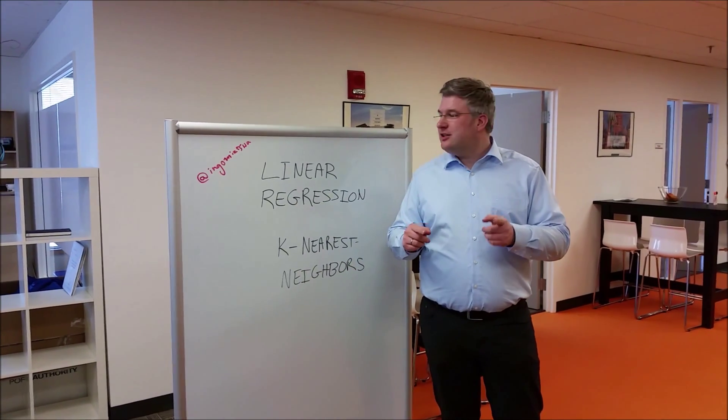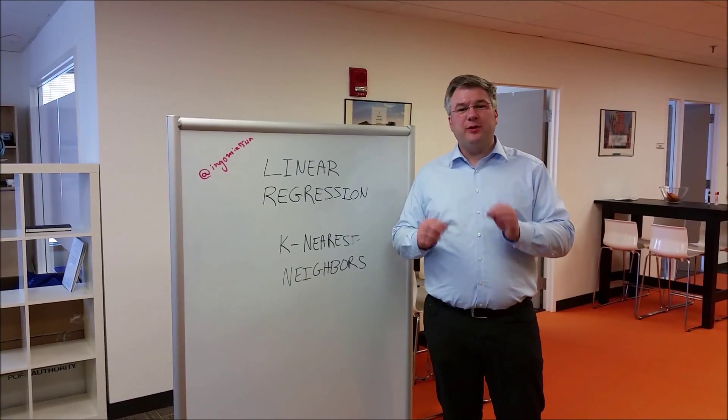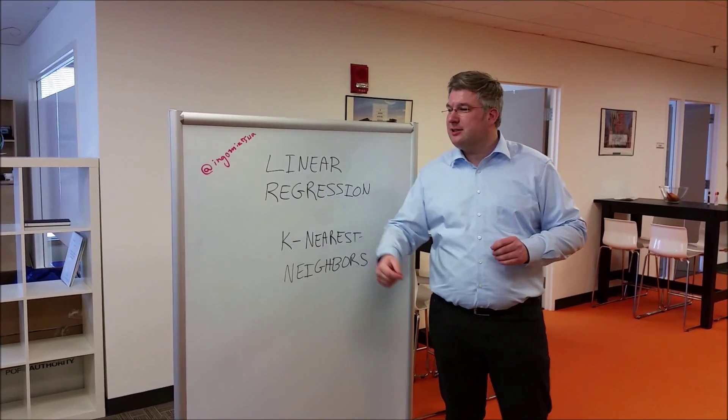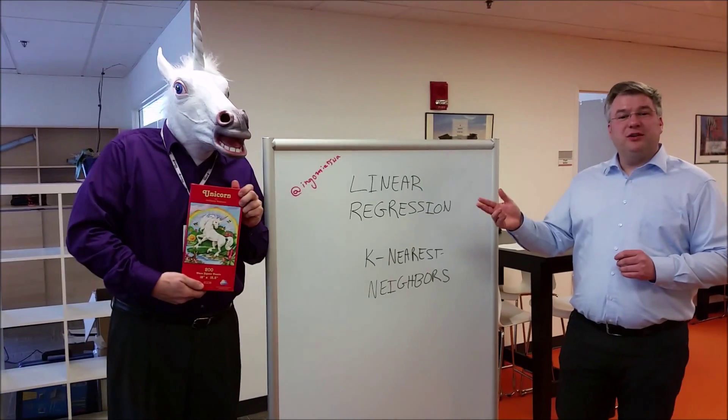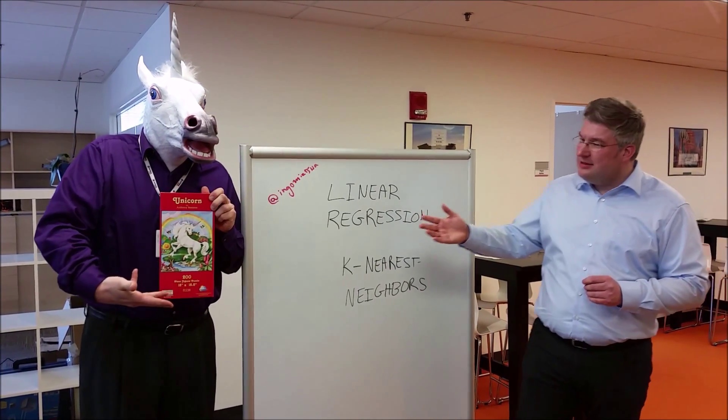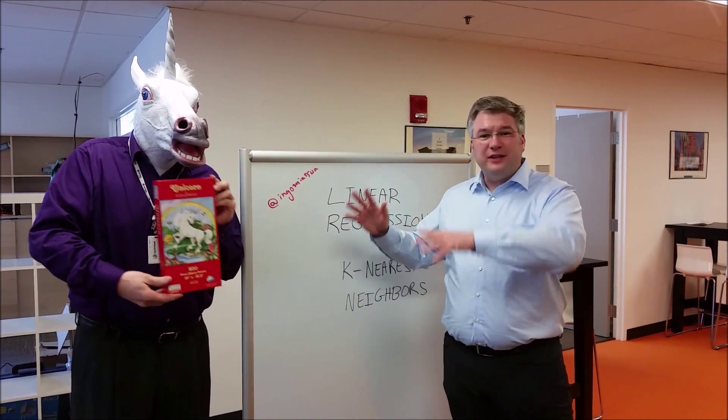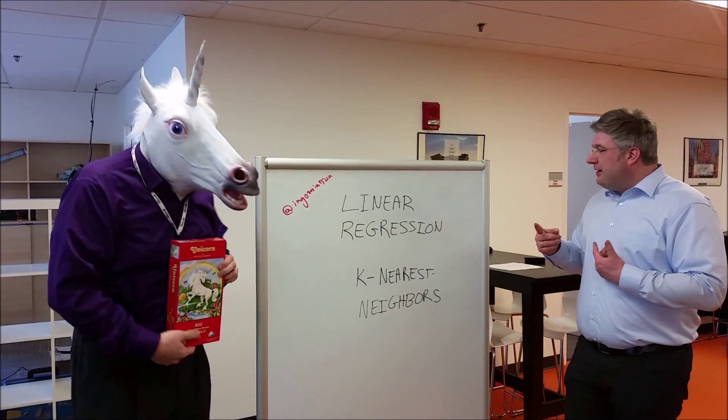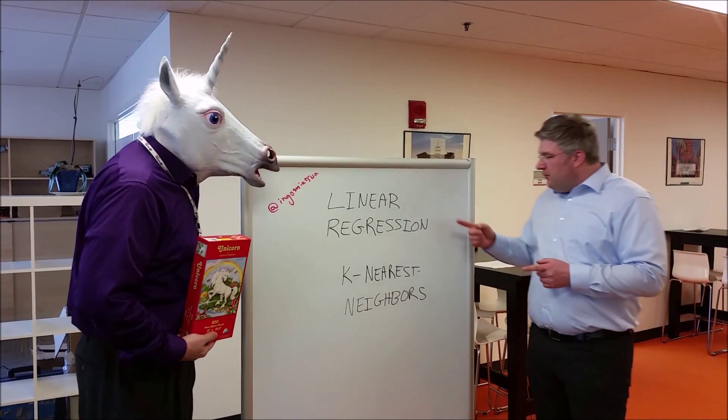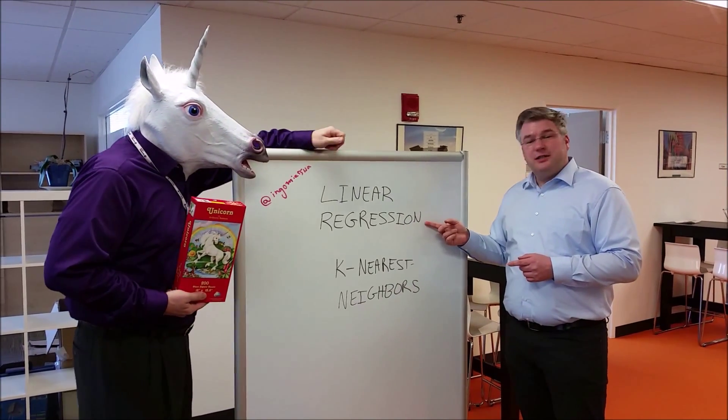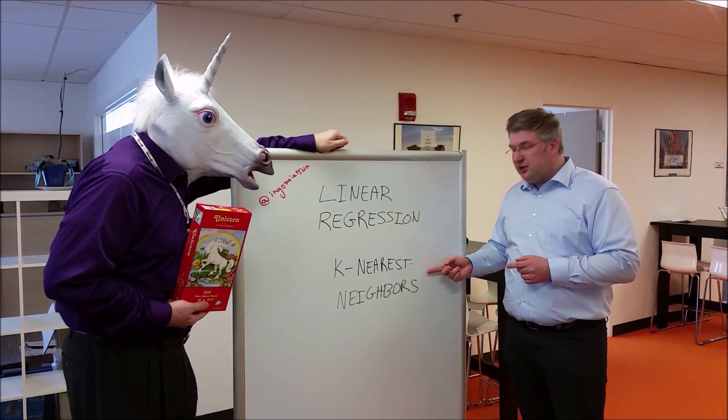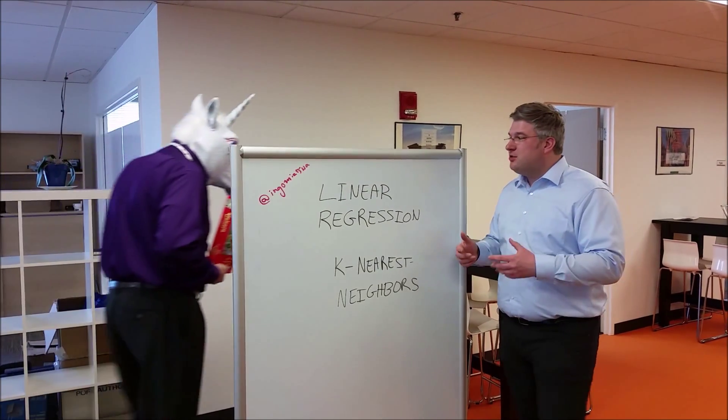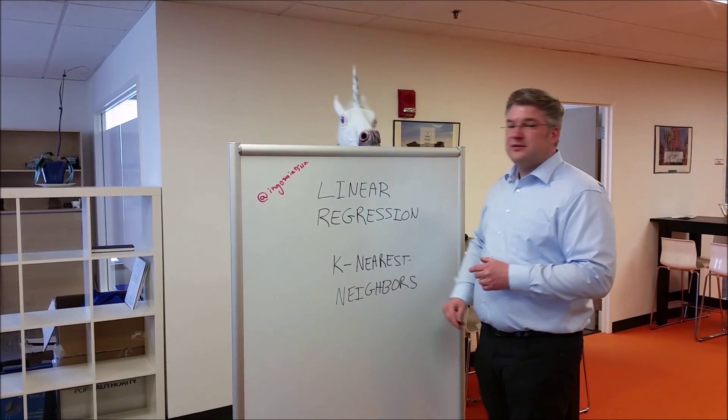So if you can solve this challenge, you can win an amazing prize. Data Scientist No. 7 show the prize. Beautiful. This puzzle here of a nice unicorn autographed and signed by Data Scientist No. 7 and me personally. You have to answer the following question: Which of those two modeling techniques, linear regression and k-nearest neighbors, is more vulnerable against outliers? Think about this and tweet the results at Ingo Mierswa. Thanks.